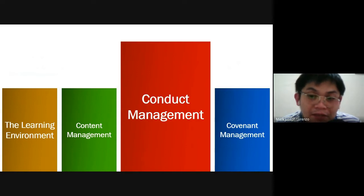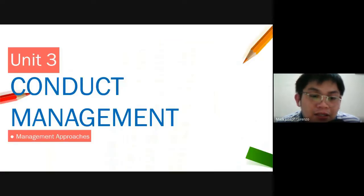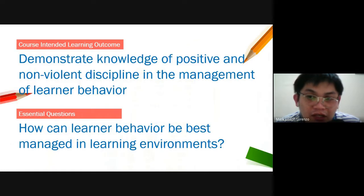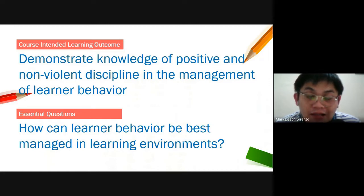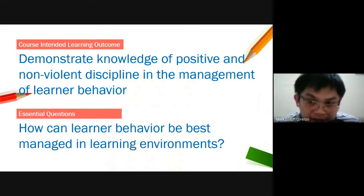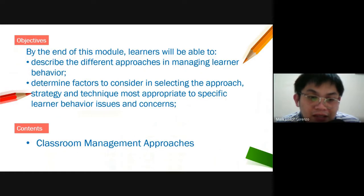Once that line is broken, it is very difficult to restore. By the end of the discussion, we will actually try to demonstrate knowledge of positive and non-violent discipline in the management of learner behavior. We should maximize positive reinforcement, and if possible, avoid the use of negative measures or punishment. It will try to answer: how can learner behavior be best managed in learning environments? We will be able to describe the different approaches in managing learner behavior.